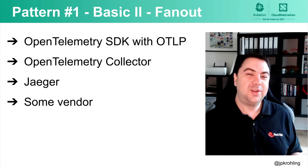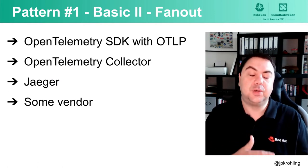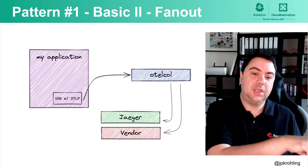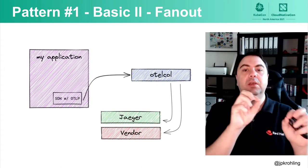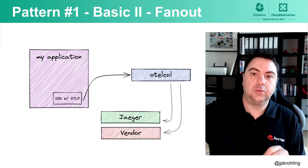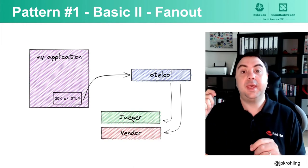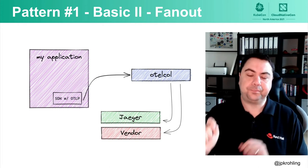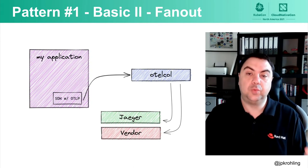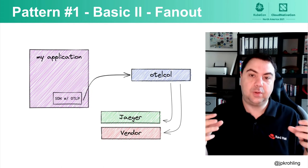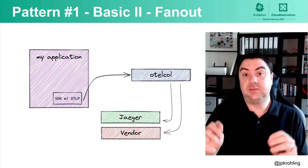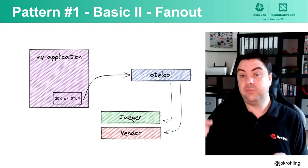The second pattern is a variant of the first: the fan-out pattern. We have the same application instrumented with the OpenTelemetry SDK exporting data with OTLP to a collector. The collector then exports data to Jaeger and additionally to an external vendor. The point is we still own our data within our own infrastructure, while simultaneously sending the same data to an external vendor for a different view.